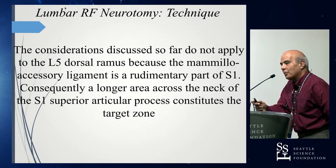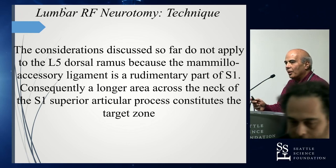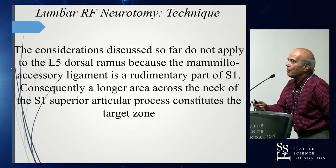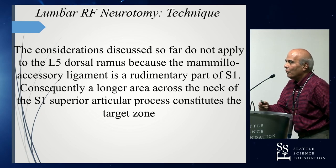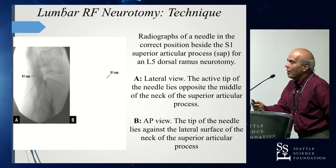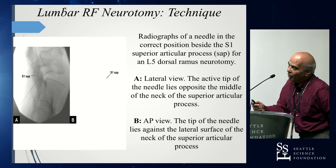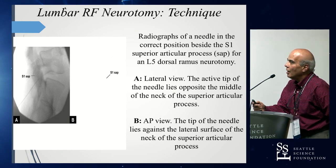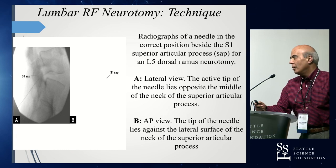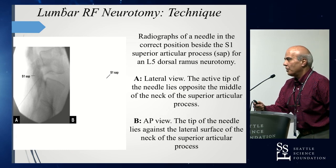These considerations do not apply for the L5-S1 facet joint, specifically for the part innervated by the L5 primary dorsal ramus, because at the L5 level the mammillary accessory ligament is rudimentary at S1. Therefore, a longer area across the neck of the S1 superior articular process constitutes the target zone. On the lateral view you can see where the active tip lies, just opposite the middle portion of the neck of the superior articular process, with the tip lying against the lateral surface of the neck.